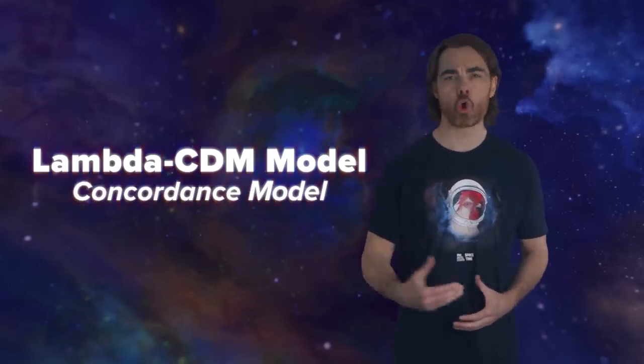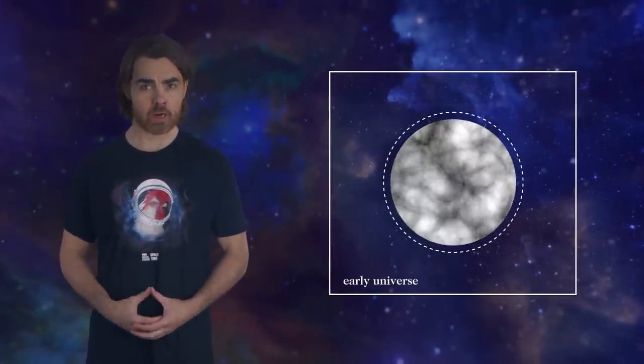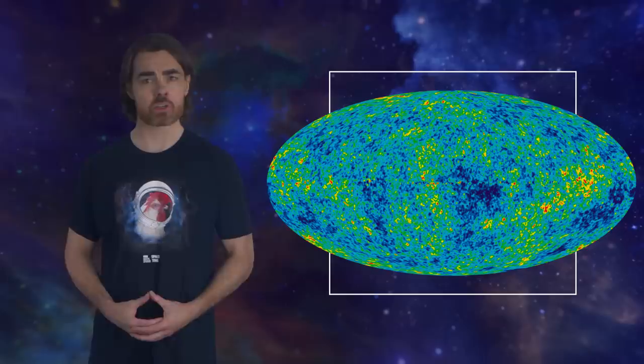We also call it the concordance model — a term that just means the current best accepted picture. Now to the crisis. Our observations of the cosmic microwave background reveal the starting conditions of the universe — the balance of dark energy, dark matter, and everything else at the earliest of times when the CMB was released, long before the first stars ever formed. So we apply the concordance model to these starting conditions to calculate how the universe should have evolved and how fast it should be expanding today. This prediction doesn't seem to agree with the observations.